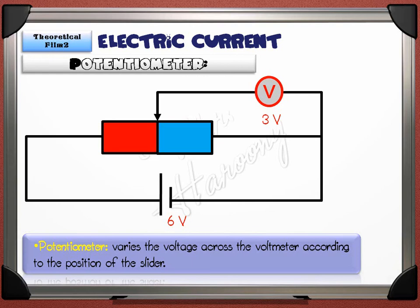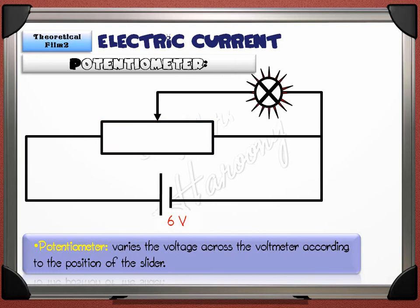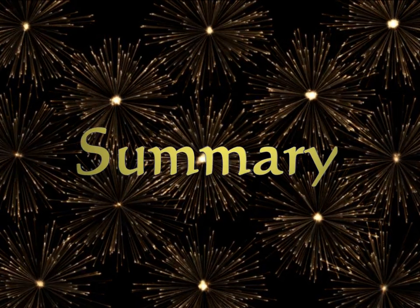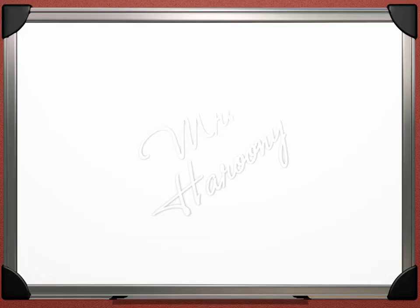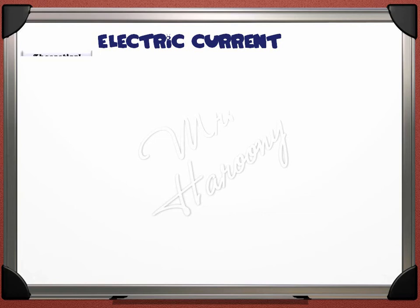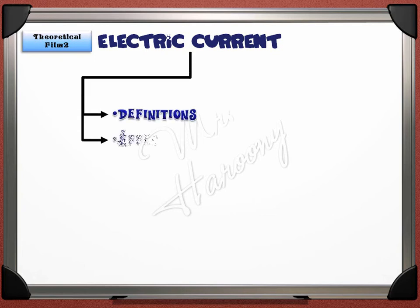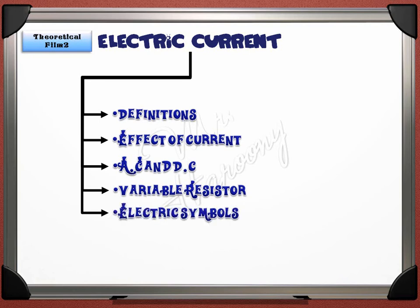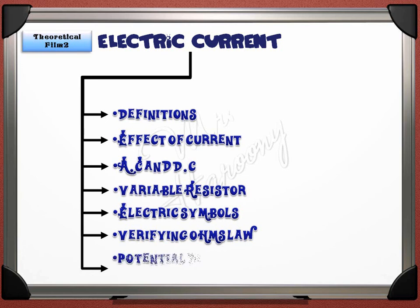Finally, you must know that we can replace the voltmeter with any component or appliance — a bulb, heater, or anything — to control its voltage. The voltage of the supply or battery is named the input, and the voltage across the component after division is named the output. To summarize, today's lecture — the second part of electric current and electric circuits — covered: definitions, effects of current, AC and DC, variable resistors, electric symbols, proving Ohm's law, and the potential divider and potentiometer.